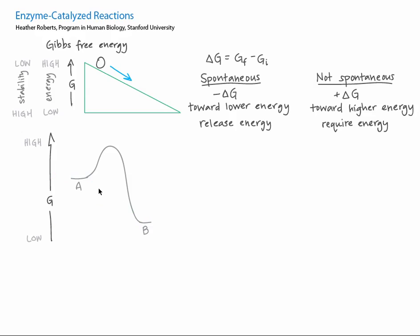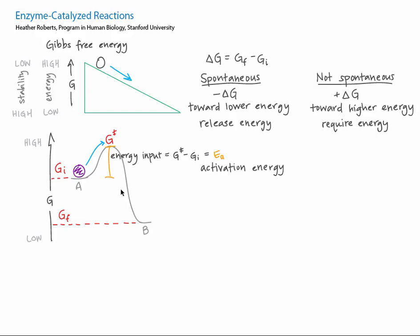Now imagine there's a hill between point A and point B. In order for the marble to get to point B at all, it needs a push — it needs to be given energy, enough to get to the top of the hill. Once there, the marble can roll down toward lowest energy, or GF. The amount of energy that must be given to the marble is the difference between the top of the hill, which is often defined as having energy G double dagger, and point A, with energy G initial. This amount of energy, indicated by the orange line, is called the activation energy, or E sub A, energy of activation.